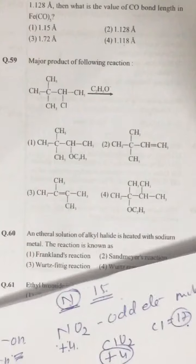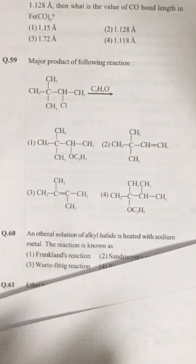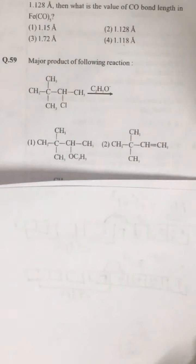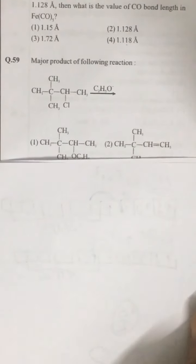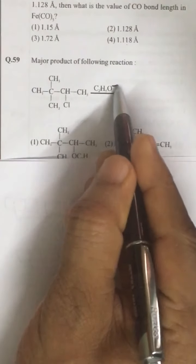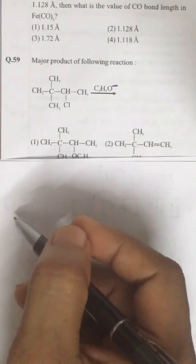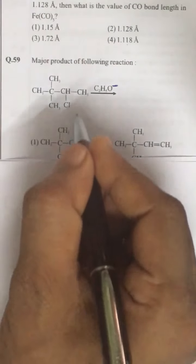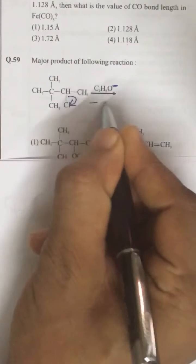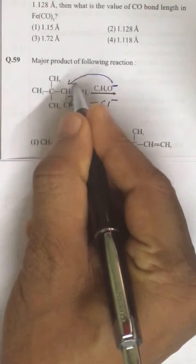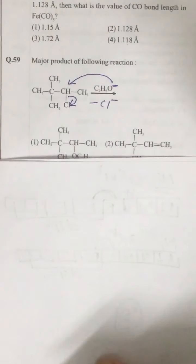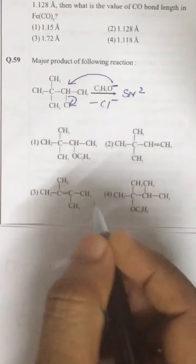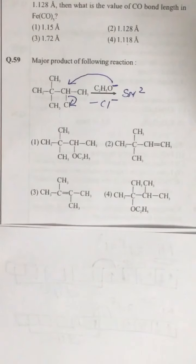Question number 59. Look at question number 59. This is treated with, this compound is treated with C2H5O negative. Temperature condition is not mentioned. If temperature condition is not mentioned, it is simply a nucleophilic substitution reaction. Cl is getting removed as Cl negative and C2H5O negative attacks. This carbon atom, this is simply SN2 mechanism. It is a strong nucleophile we are taking.